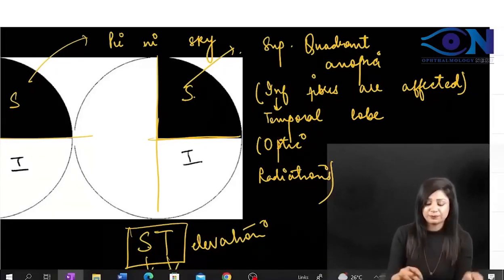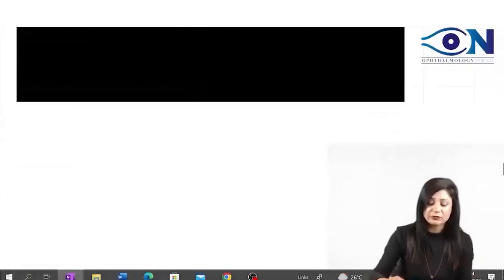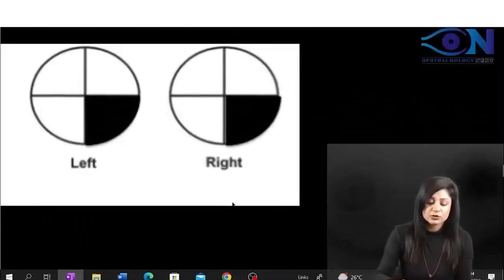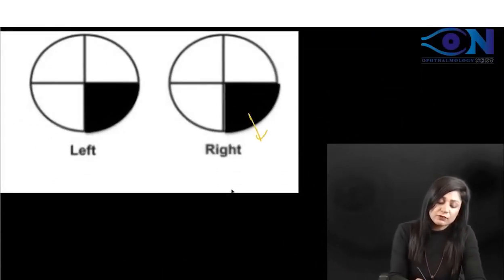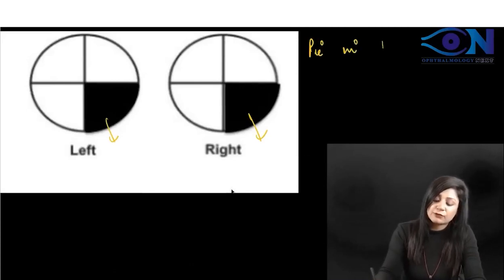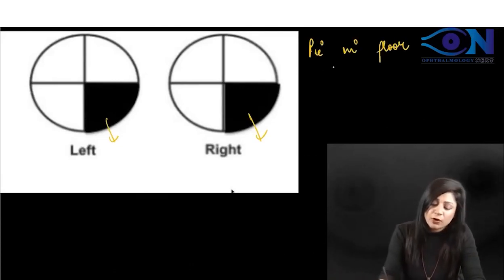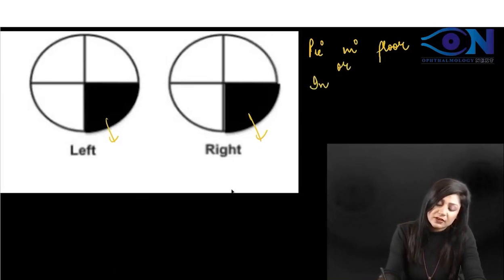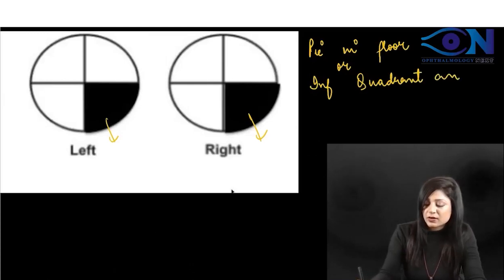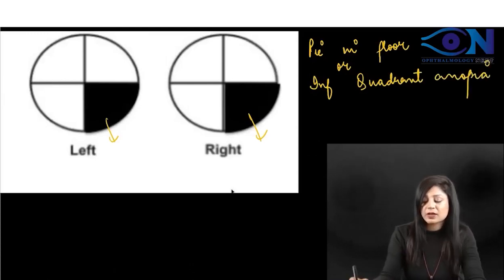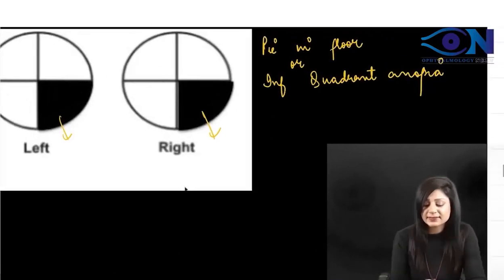On the other hand, the opposite pattern is 'pie in the floor,' where the inferior sides are affected. This is called inferior quadrant anopia — the inferior quadrants on both sides are affected.